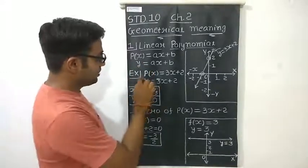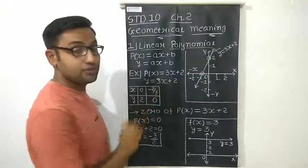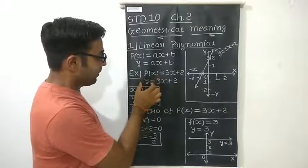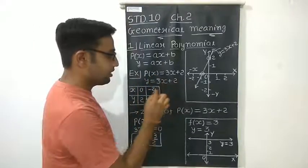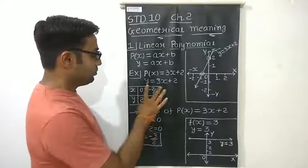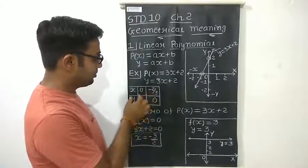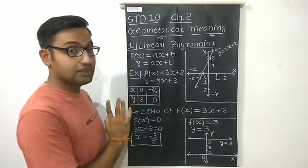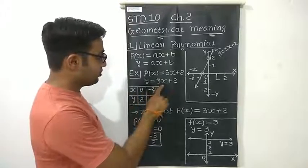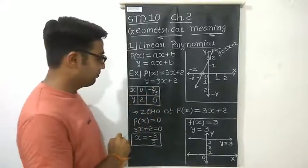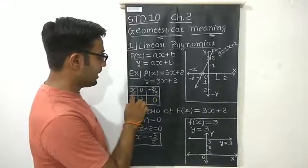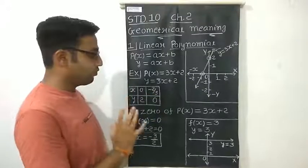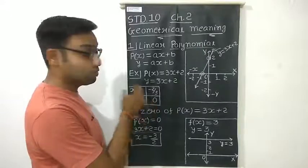Suppose there is an example of a linear polynomial: p(x) = 3x + 2. By taking p(x) = y, we get y = 3x + 2. Now, to get points, we take different values of x and find the corresponding values of y. By taking x = 0, we get y = 2. By taking y = 0, we get x = −2/3. You can find other points as well.